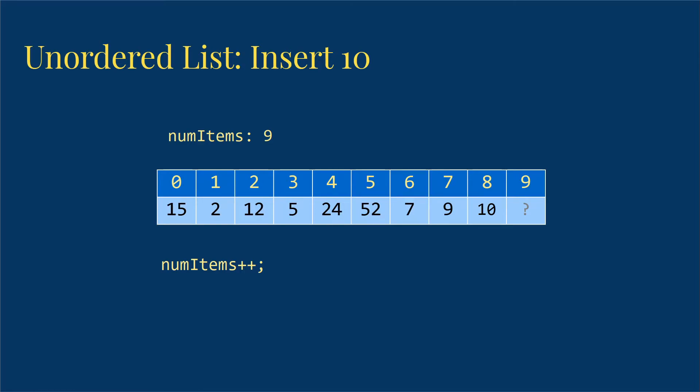But let's suppose now that we want to delete something from the list. Let's suppose we want to delete the 7. The first thing we have to do is to find the value we want to delete. Fortunately, we already know how to do that, so we'll use the find that we already wrote to determine what the index of the 7 is.